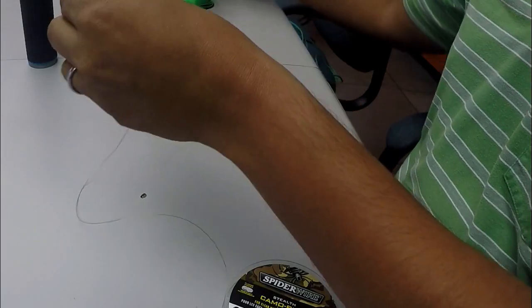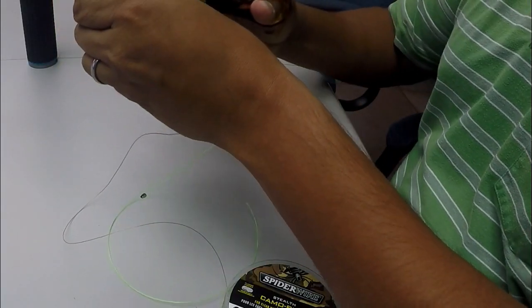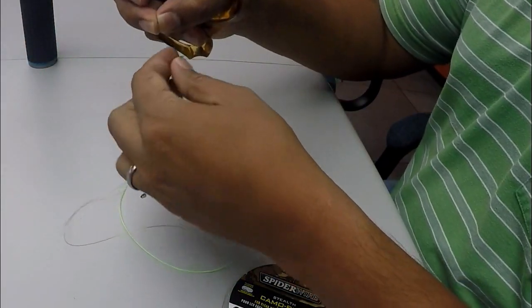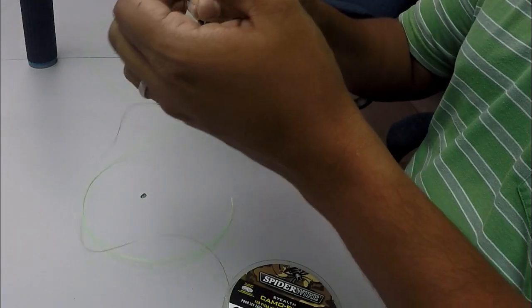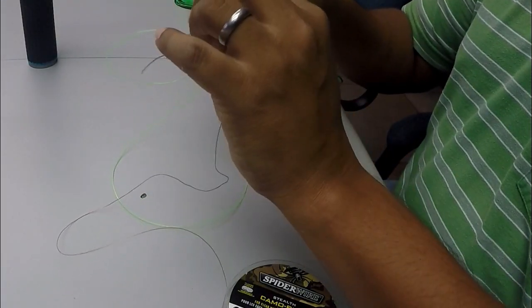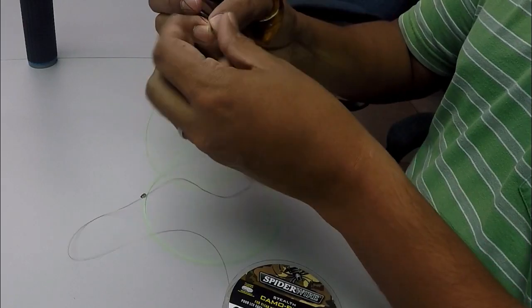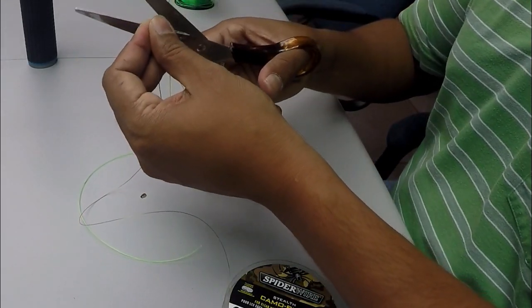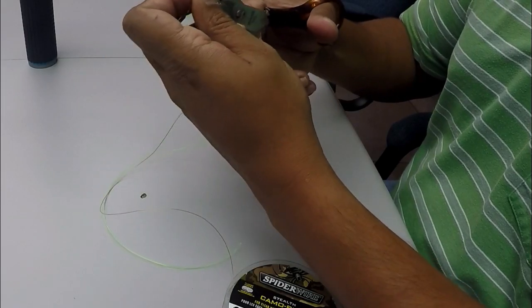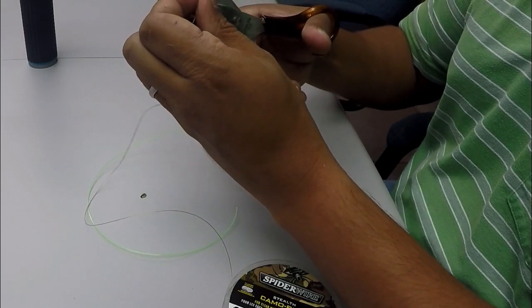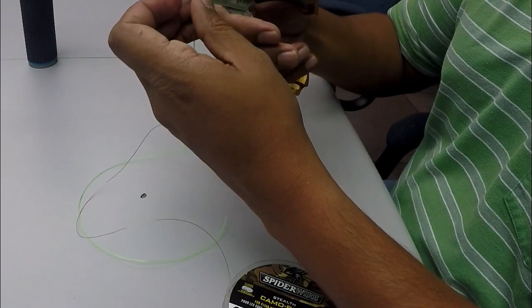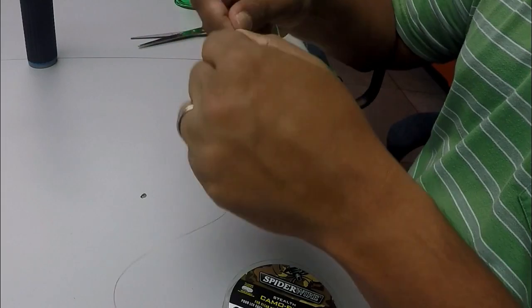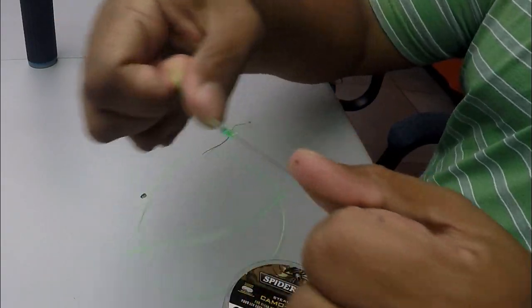So then you take your scissors, or whatever you have. Cut as close as possible. You're going to leave a very low profile. You can cut as close as possible, because this knot is not going to be loose. So, you know, you cut it. The braid is a little bit more difficult to cut. And there you have it. The finished knot.